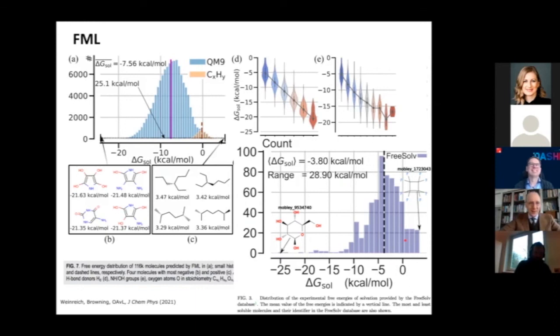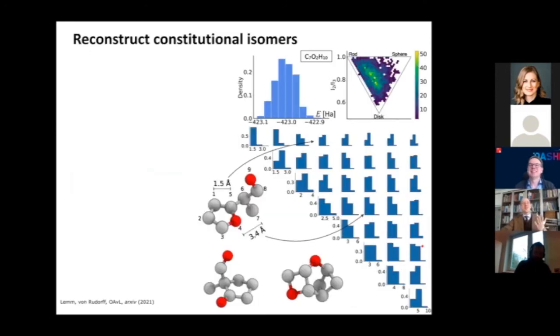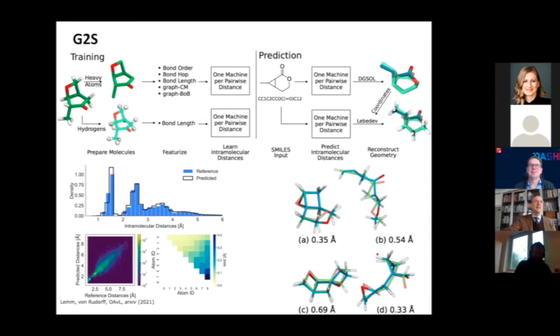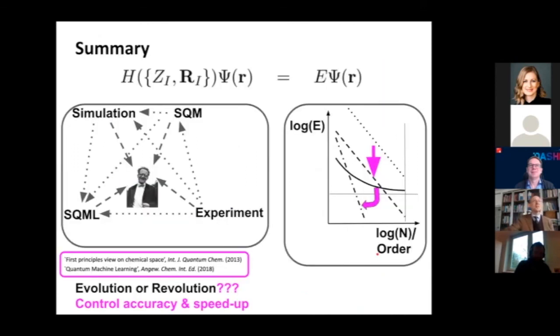Matthias switched on his camera. I think this means I should stop. Let me skip this third paper I wanted to tell you about. Unfortunately, I spent a little bit too much time in the beginning, but I hope that helped to better explain things. In this third paper we use machine learning to reconstruct geometries, to predict new geometries given a graph as an input. We call this the graph to structure machine, GPS.